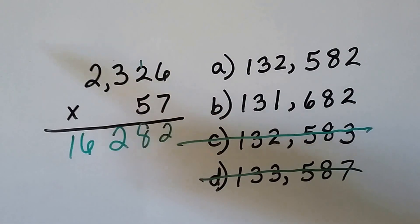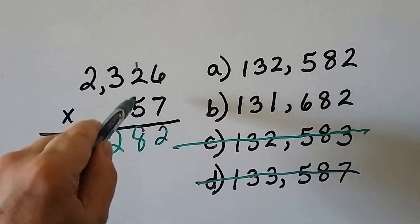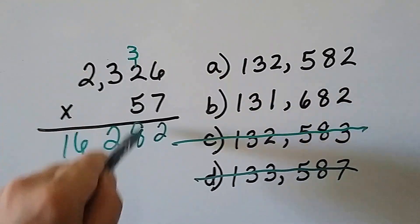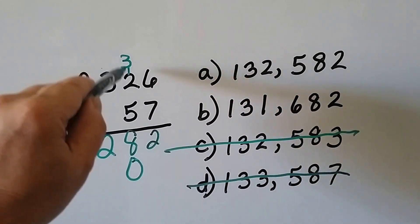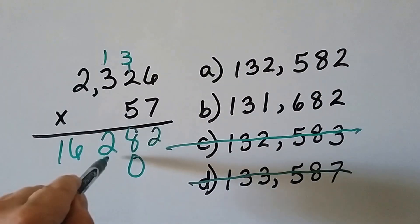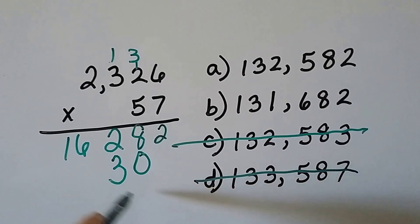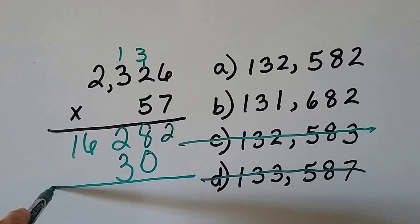Five times six is 30. Carry the three, put the zero down. Five times two is 10, 11, 12, 13. Now look, when we go to add this, look where we're at right now.